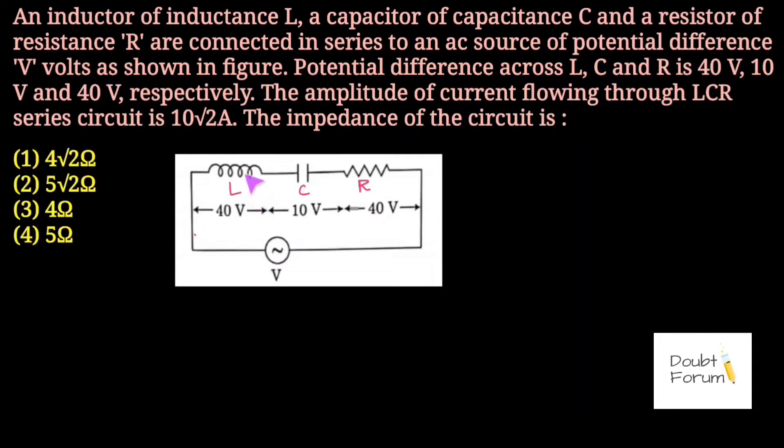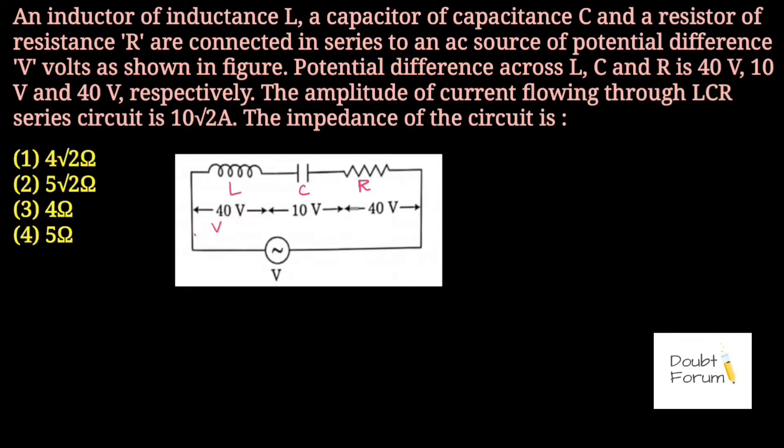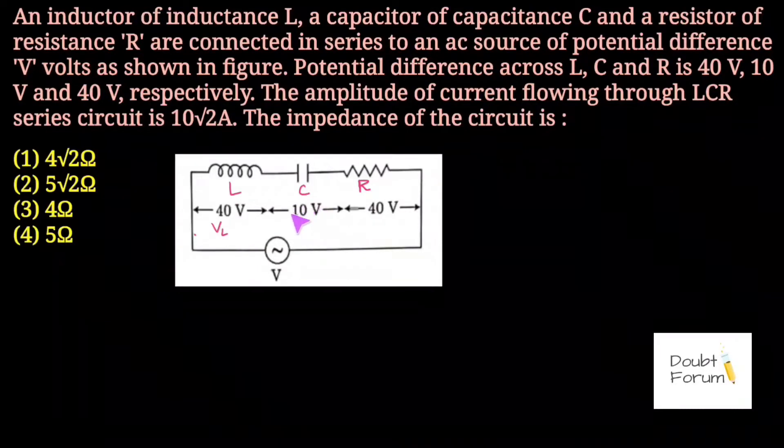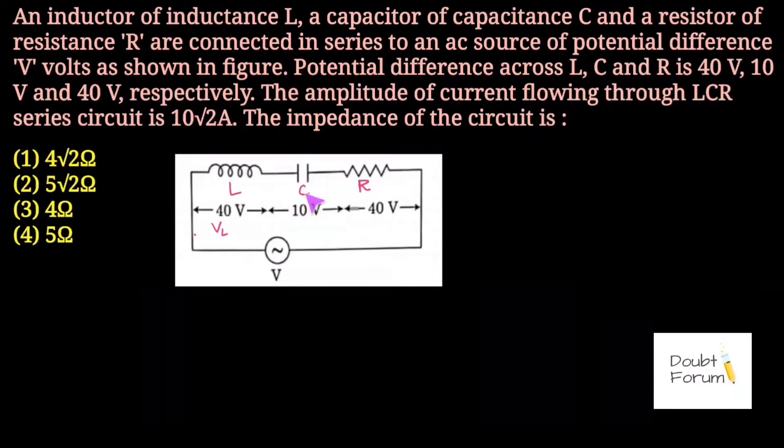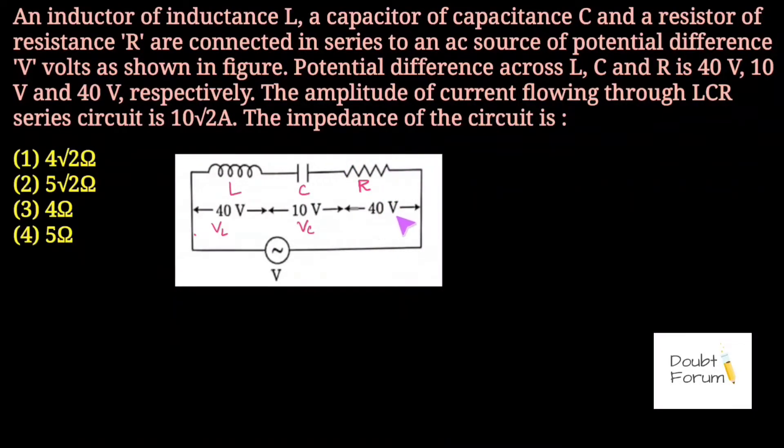The voltage across the inductor is 40V, represented as VL. The voltage across the capacitor is 10V, represented as VC, and the voltage across the resistor is 40V, represented as VR.